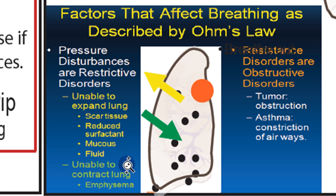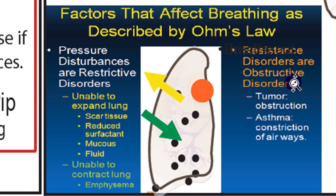The main example of a disorder that makes it hard to decrease volume is emphysema — it's actually hard to increase the pressure and hard to breathe out. The other type of disorder is an obstructive disorder, where the lung is doing fine at changing its volumes and pressure, but there's something obstructing the flow of air — a tumor, or in the case of asthma, the bronchioles constrict, making it harder for air to flow in and out.